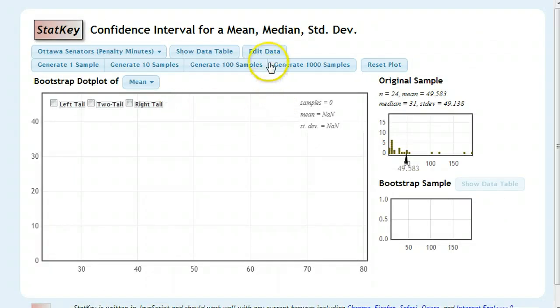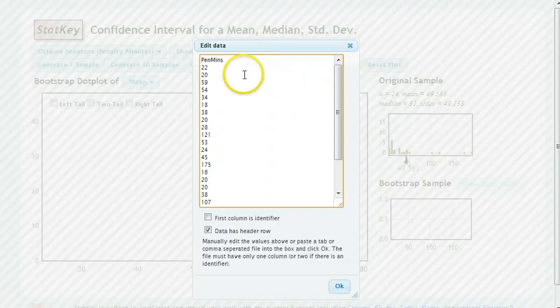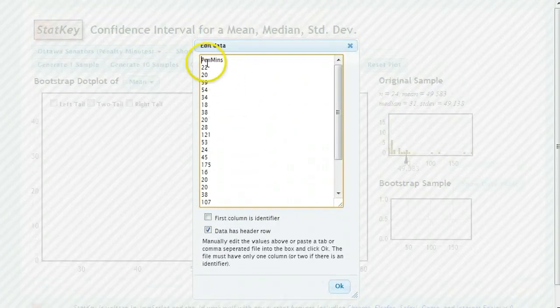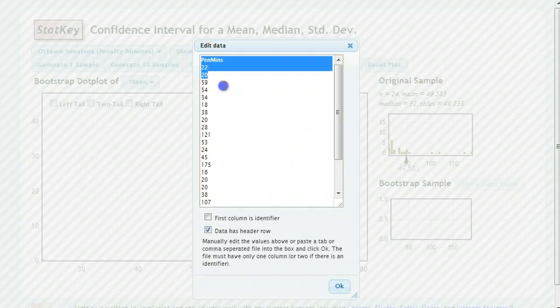So the first thing we need to do is get our data inside. We go up to the Edit Data button. Unlike the proportions, this one's a little bit more work to do. We're not just entering a couple numbers.